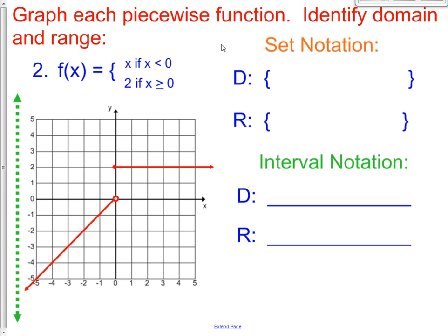Hi class. Now that we've been introduced to what set and interval notation is, we're now going to apply it to our graphs that we talked about yesterday with piecewise functions. So problems 2, 3, 4, and 5 — we did these in our own handwriting yesterday. I drew these in to make them look a little bit nicer, but we have them all written in our notes from yesterday, so please take those out. We're now going to be doing domain and range.